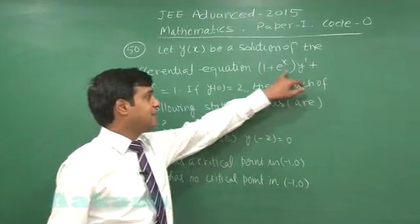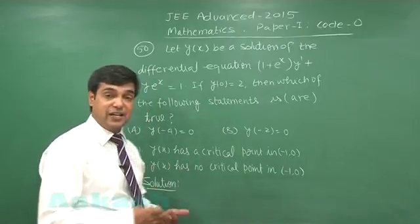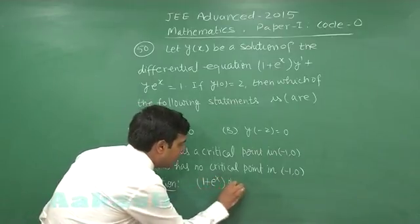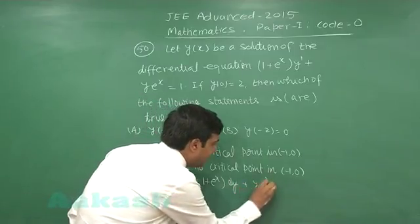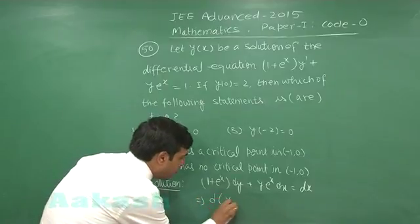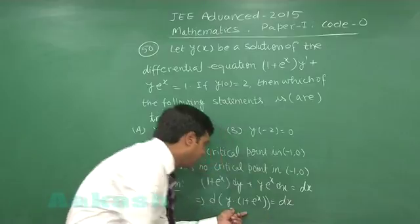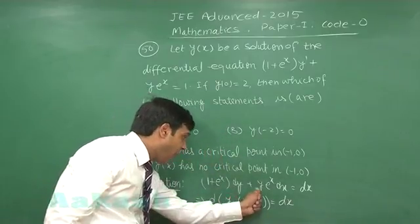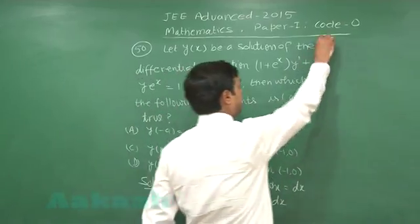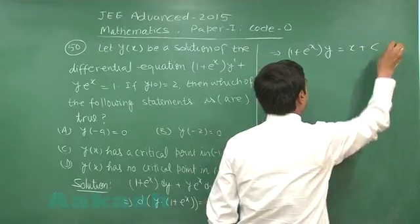We have two options. One, we can clearly see on dividing by 1 plus e x, it is in the form of linear differential equation which can be solved by finding its integrating factor and simplifying. Or we can also look at it like 1 plus e x into dy plus y e x into dx is equal to dx or this is d of y into 1 plus e x is equal to dx. Because on differentiating this one, we can see it is 1 plus e x into dy plus y into derivative of 1 plus e x that is simply e to the power x into dx.